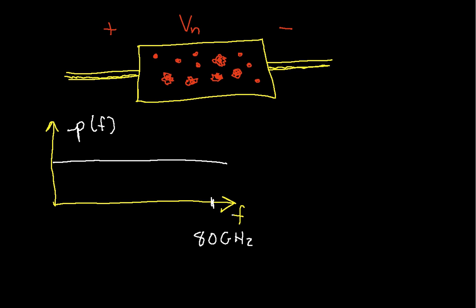Now, where it's flat out to does depend on temperature. The higher the temperature, if I understand correctly, the lower the frequency at which it stays flat. So, it turns out that this power spectral density has value 4KTR, where K is Boltzmann's constant, and T is the temperature of the resistor in degrees Kelvin, R is the resistance of the resistor.